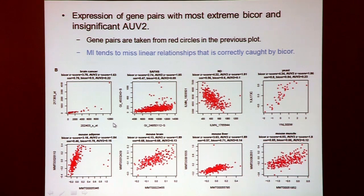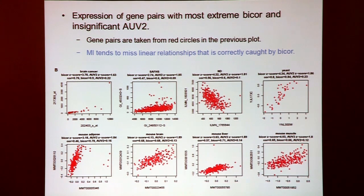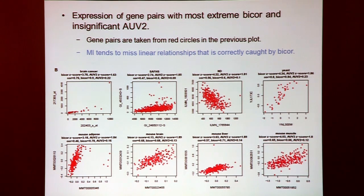In response to a question: yes, mutual information can detect non-co-expression and anti-correlation — that's a major attraction. It can pick up general dependence measures including negative relationships. However, it takes effort to find dependence relationships detectable only by mutual information and not by bi-weight mid correlation. Most relationships drawn on paper still have a remnant of a linear component.